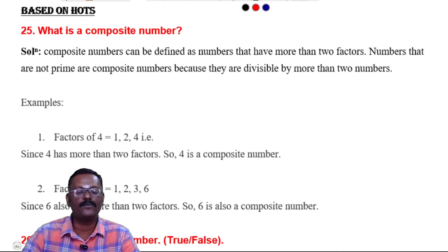25th question: What is a composite number? Composite numbers can be defined as numbers that have more than two factors. Numbers that are not primes are composite numbers, because they are divisible by more than two numbers.